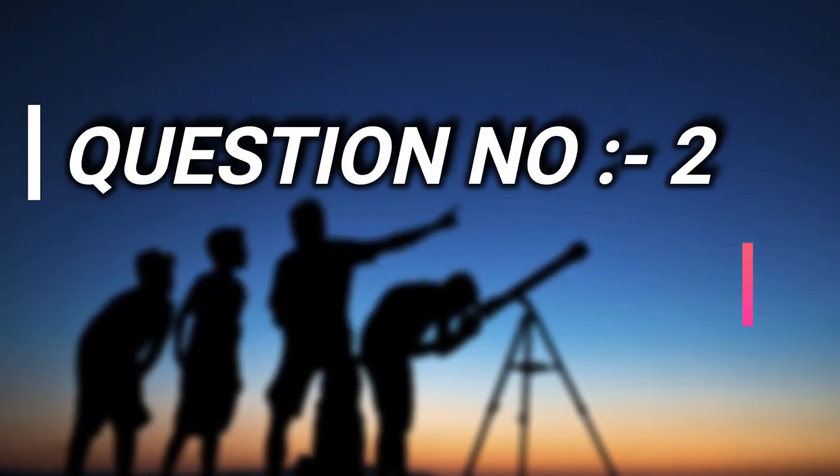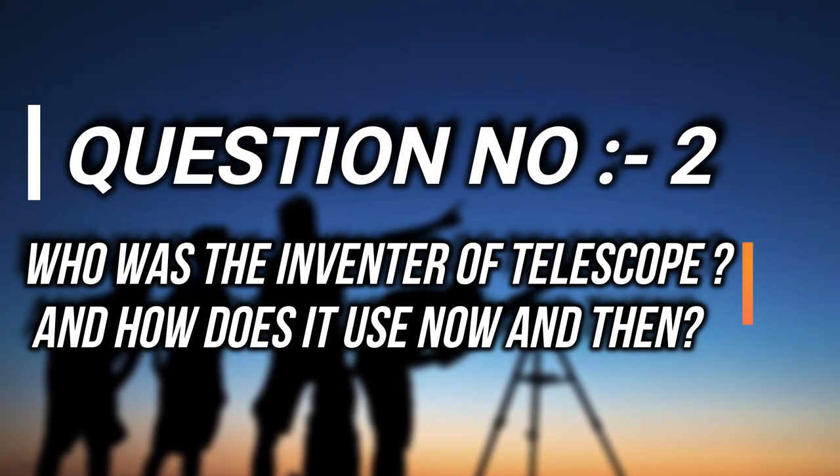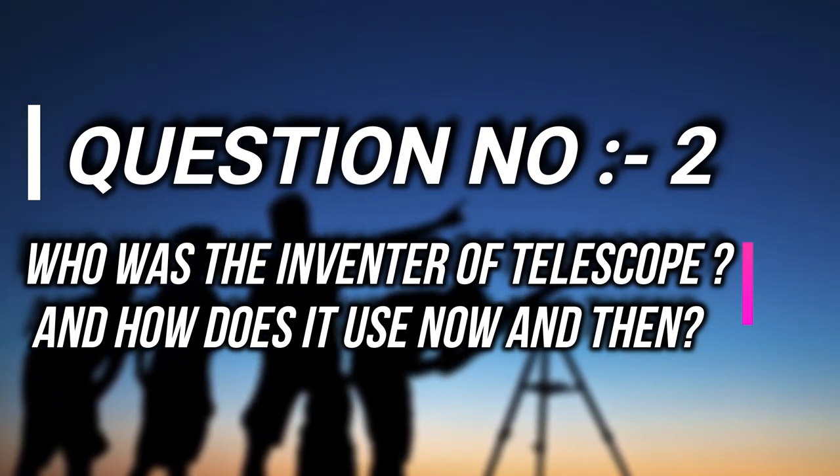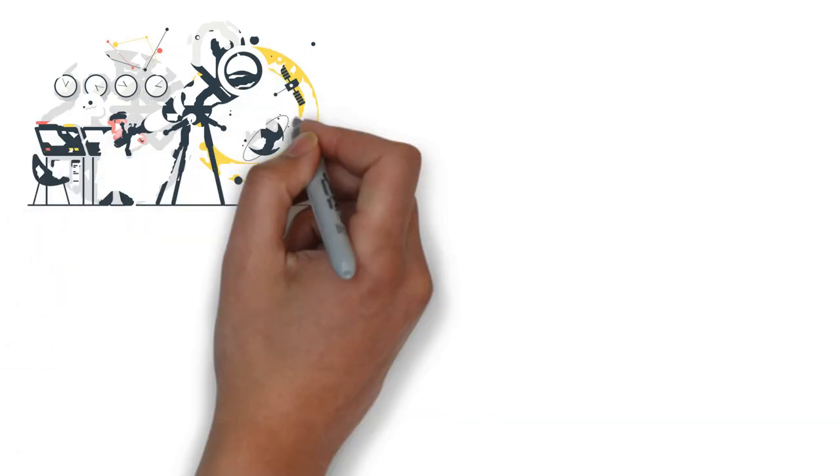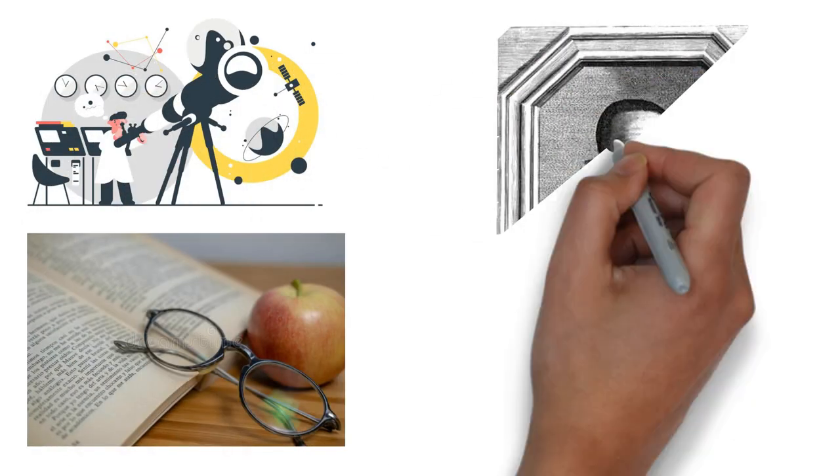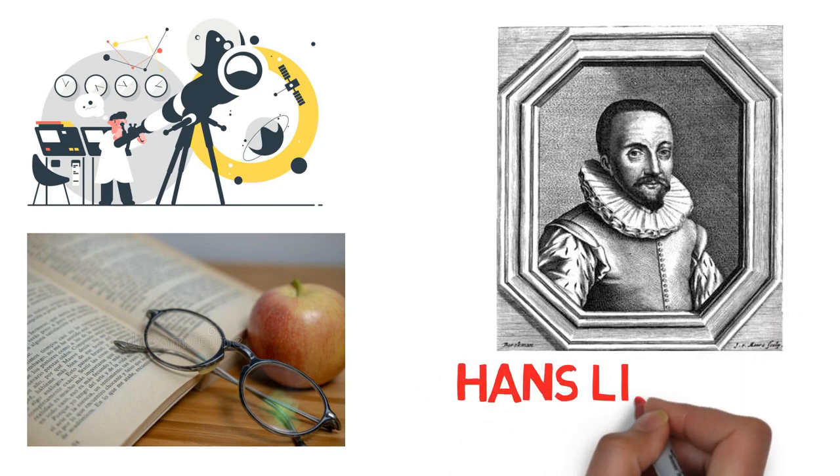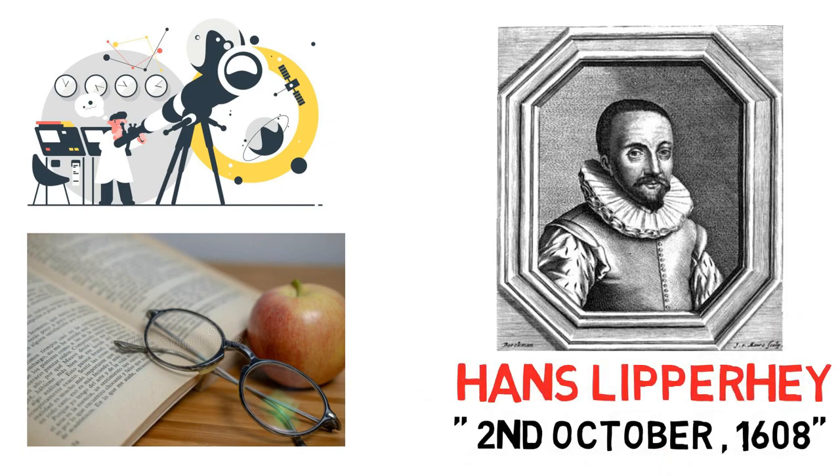Question number 2: Who was the inventor of the telescope and how does it use now and then? The inventor of the telescope was not an astronomer. He was just a spectacle maker. His name was Hans Lippershey and he invented it on October 2, 1608.